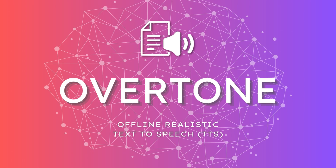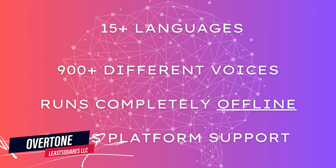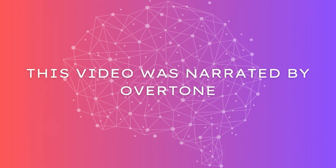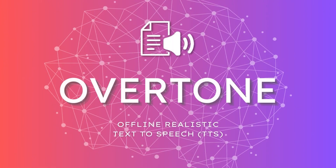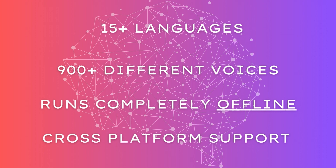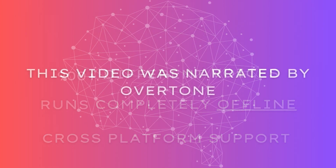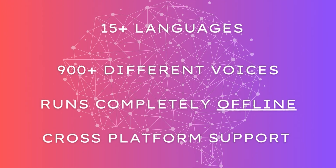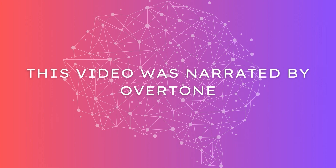If you want a realistic voiceover AI for your video game, then this asset is for you. Overtone is an offline text-to-speech asset for Unity. Enrich your game with more than 20 languages, more than 900 English voices, rapid performance, and cross-platform support. With Overtone you can effortlessly add realistic AI-generated voices to your games, bringing your characters to life and enhancing the overall gaming experience. This video was narrated by Overtone — get Overtone in the Unity Asset Store.